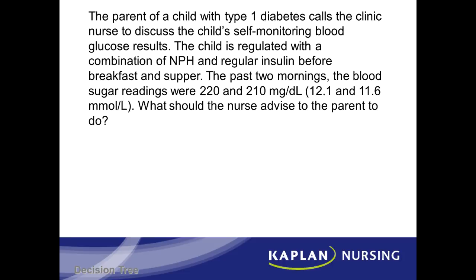Let's look at this question. The parent of a child with type 1 diabetes calls the clinic nurse to discuss the child's self-monitoring blood glucose results. The child is regulated with a combination of NPH and regular insulin before breakfast and supper. The past two mornings, the blood sugar readings were 220 and 210 milligrams per deciliter, or 12.1 and 11.6 millimoles per liter. What should the nurse advise the parent to do?